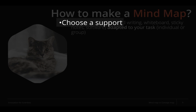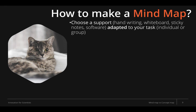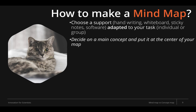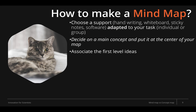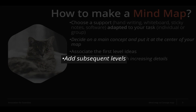First, you must choose a support and adapt it to your task — whether it's an individual task or group work. This support can be handwriting, a whiteboard, sticky notes, or software. Then you decide which main concept you will put at the center of your map, and you start to write the first concepts related with the central one. If you use the Kipling method, you will first put its six questions, then start to list all topics, concepts, and questions that can be related with each of the six questions. You will add subsequent levels with additional detail.